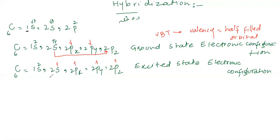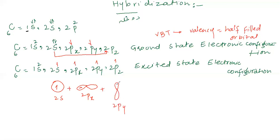We have 2S — it is circular in shape — with one electron. Then we have 2Px along the x-axis, also with one electron. Then 2Py, and 2Pz along the z-axis. The energy of 2S is smaller. But 2Px, 2Py, and 2Pz all have the same energy, which is greater than 2S.